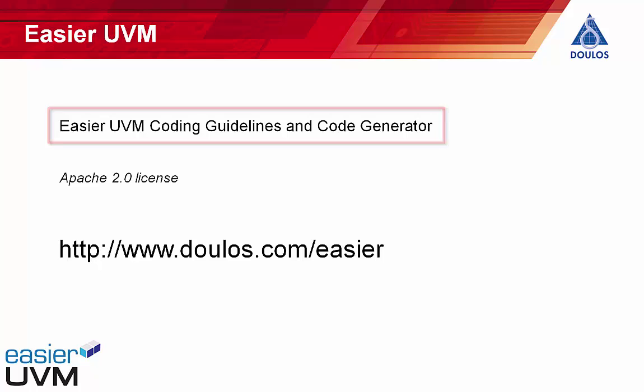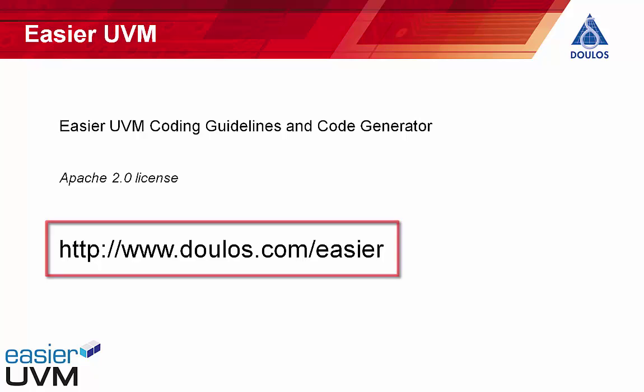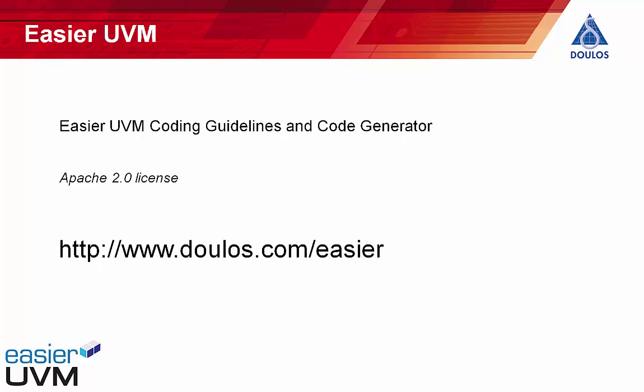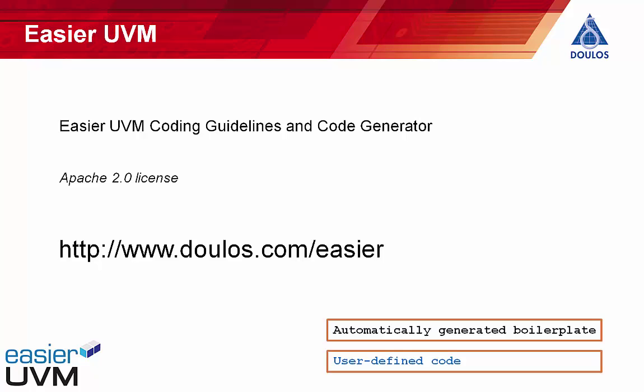Most of the code examples in this tutorial were generated from the Easier UVM code generator. The convention used on these slides is that automatically generated boilerplate code is shown in a black font, whereas user-defined code fragments inserted into that boilerplate code are shown in a blue font. So let's take a look at tests in UVM.